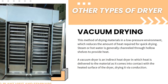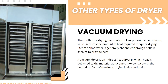Vacuum drying is a method of drying materials in a low-pressure environment, which reduces the amount of heat required for quick drying. Vacuum dryers are used to dry thermolabile materials at low temperatures and to recover solvents from solid products. Steam or hot water is generally channeled through hollow shelves to provide heat. Drying temperatures can be precisely controlled, and the material is kept at the boiling point of the wetting agent for most of the drying cycle. A vacuum dryer is an indirect heat dryer where heat is delivered to the material via conduction through the heated surface.